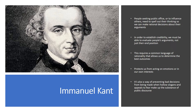Kant is related to John Stuart Mill in that freedom of speech for both philosophers is about finding a higher truth. It's also a way of preventing bad decisions from being made when hollow slogans and appeals to fear make up the substance of public discourse.